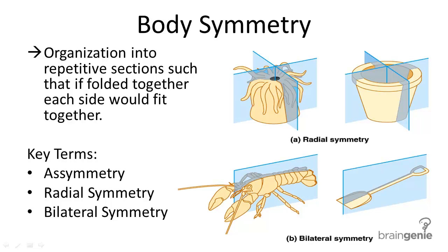Body symmetry refers to the organization of living things into repetitive sections. There are many types of body symmetry. Let's list them from primitive to complex, according to the evolutionary tree of life.